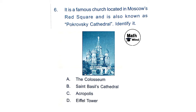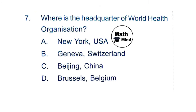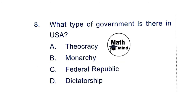Question 6: It is a famous church located in Moscow's Red Square and is also known as Pokrovsky Cathedral. Option B is correct: Saint Basil's Cathedral. Question 7: Where is the headquarters of the World Health Organization? Option B is correct: Geneva, in Switzerland.